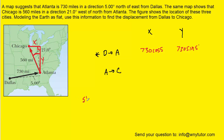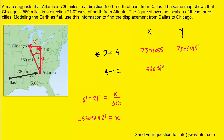We use the sine of that 21-degree angle, setting it equal to the opposite side. Opposite to the 21-degree angle is the X component, so we have X over the hypotenuse, which is 560. Solving for X by multiplying both sides by 560, X equals 560 times the sine of 21. However, the X component is actually pointing to the left, so we must apply a negative sign: the X component is negative 560 times the sine of 21.